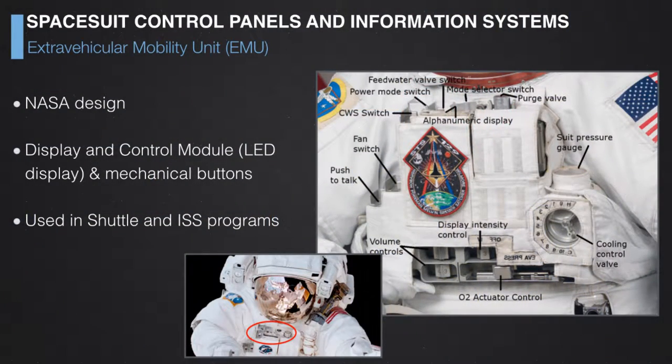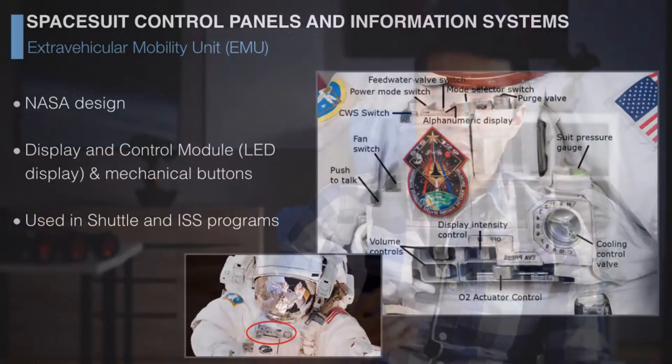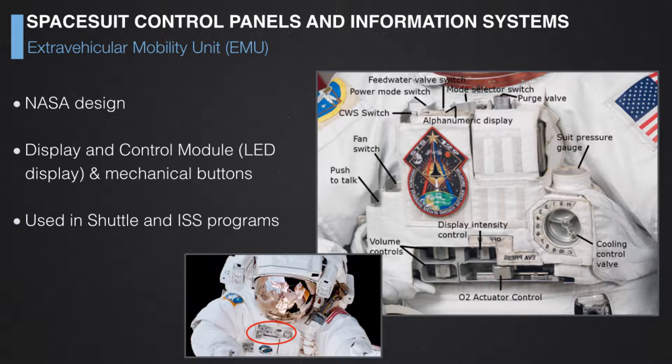The current state-of-the-art, arguably the most advanced information system on a spacesuit, is the one in the NASA Extra-Vehicular Mobility Unit, or EMU. It has a series of switches and indicators on the chest of the astronaut, but they are fixed. Therefore, you need to use a mirror on your wrist to view what the indicators are showing and which switches to turn. It is also difficult to convey much information, as there is only a small alphanumeric display strip.